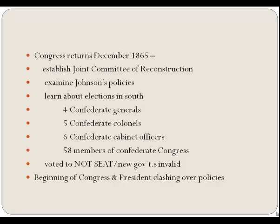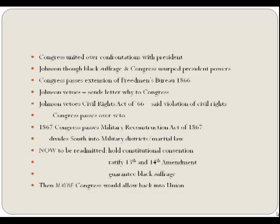It's December 1865. Congress is reconvening. As soon as they reconvened, they were in a state of shock at what had been going on. They established a Joint Committee of Reconstruction to examine the President's policies and voted not to seat the newly elected Southern representatives—which included the former Vice President of the Confederacy, four Confederate generals, five Confederate colonels, six Confederate cabinet officers, and 58 members of the Confederate Congress. They also voted not to recognize the newly established state governments as valid. This was one of the big reasons Congress and the President would clash continually over the next two years.